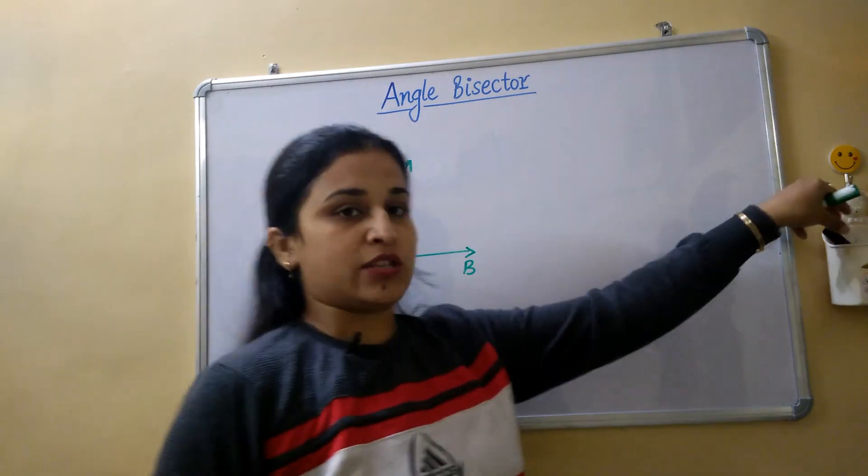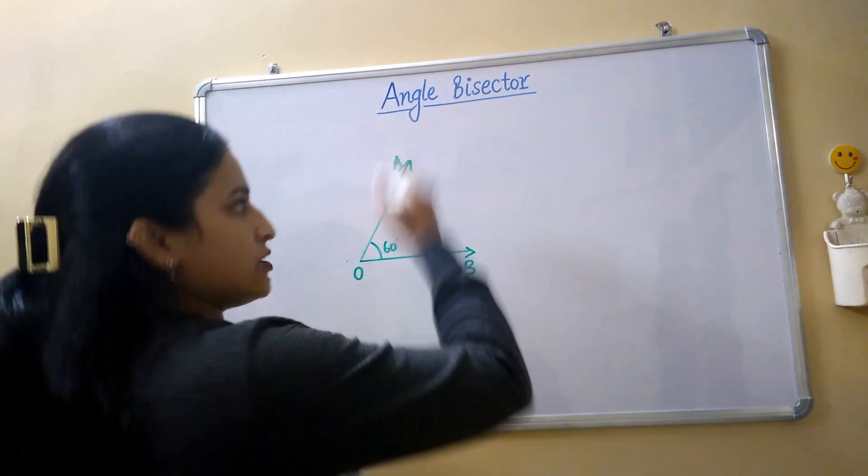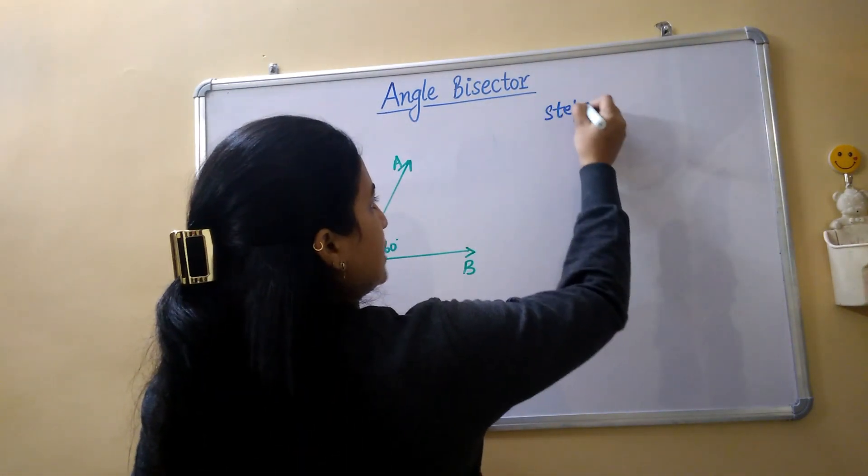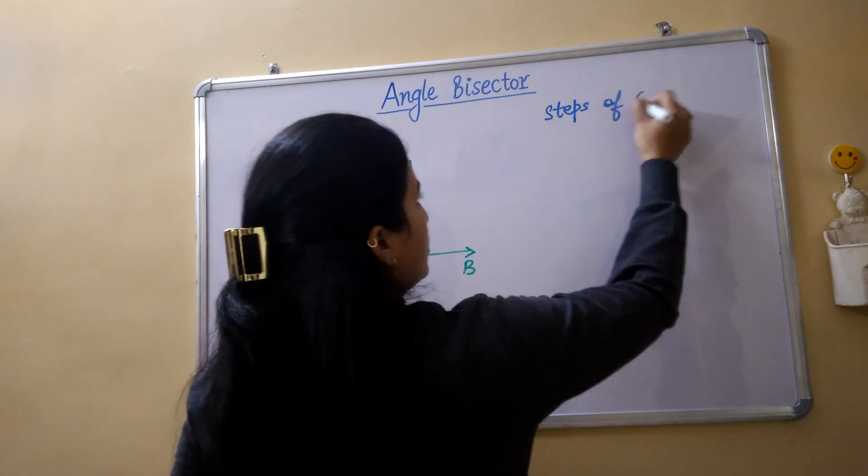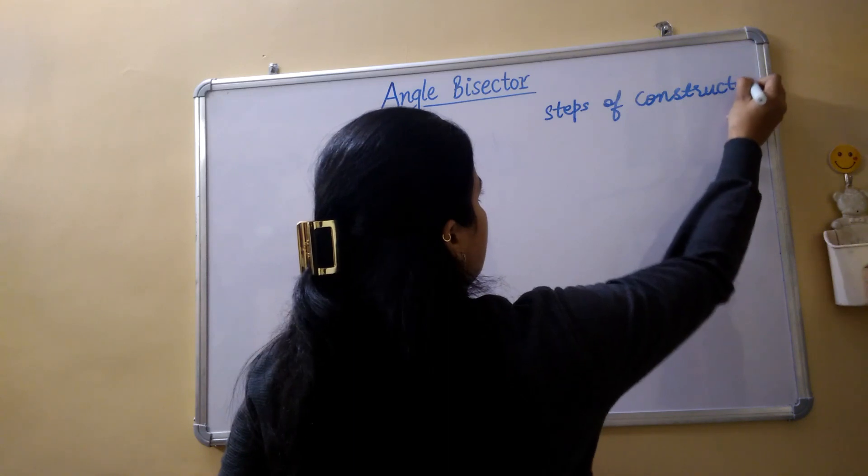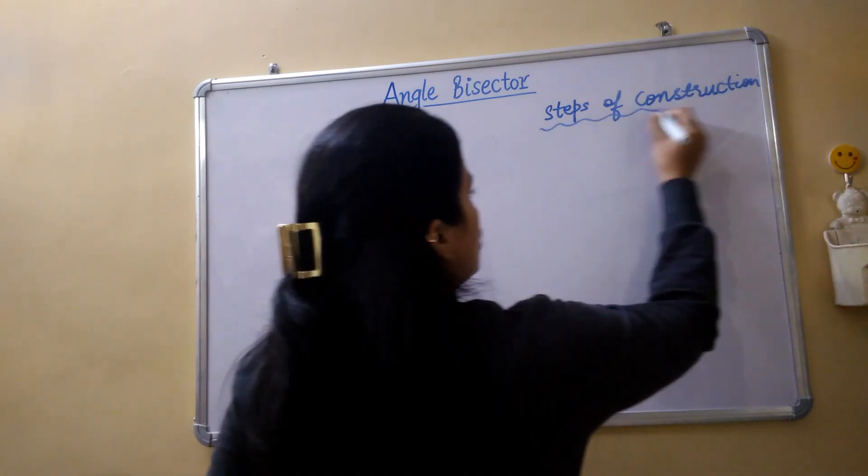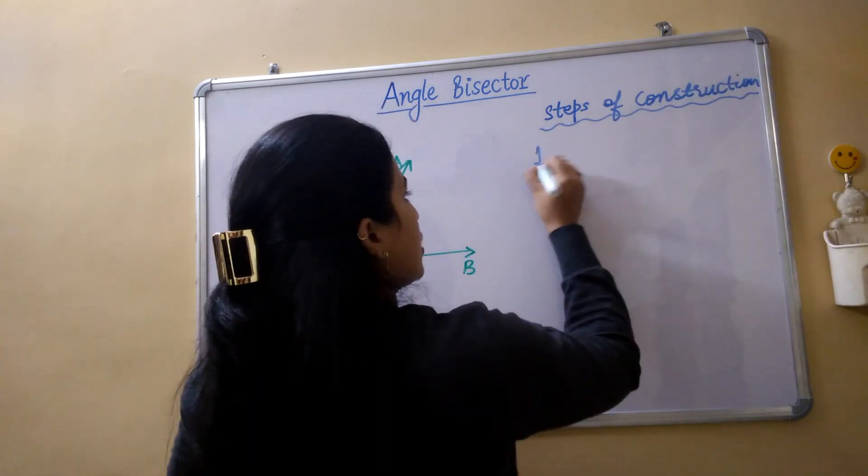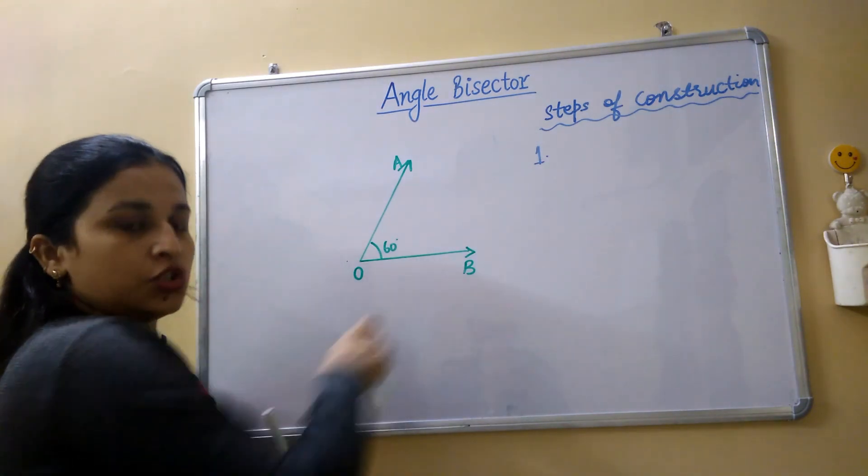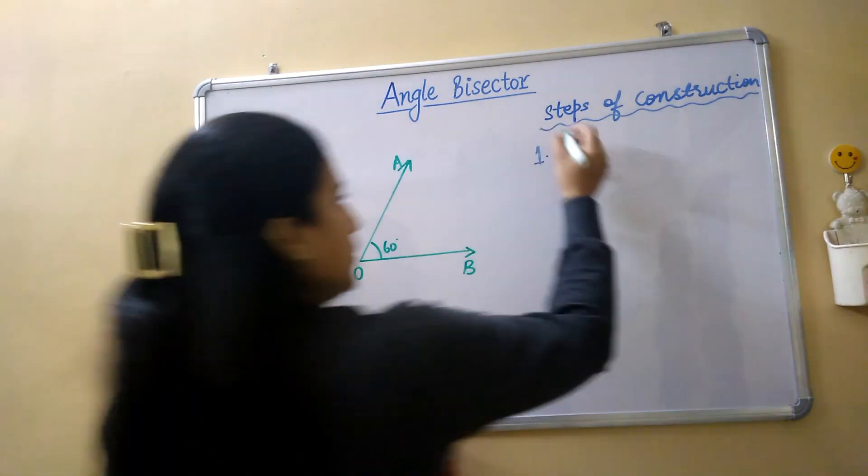Now today we will write steps of construction as well as do the construction. So I am going to write steps of construction. First step of construction would be take the angle you want to divide - draw the angle.